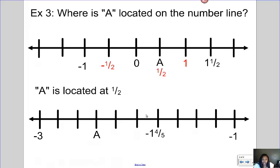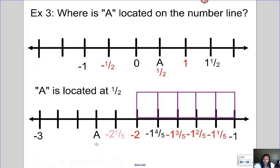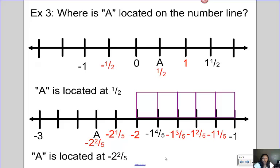On the second number line, again we want to know where is A located. I see negative one and four fifths, which clues me in that it's probably broken into fifth-sized pieces. If I were to take a fractional bar and draw that into fifths, going from negative one to here: I have negative one here, then this line would be negative one and one fifth, this would be negative one and two fifths, this would be negative one and three fifths, and that makes this negative one and four fifths — which does work — and then this would be negative two. Keeping going with the pattern, this would be negative two and one fifth, this would be negative two and two fifths, which tells me that A is located at negative two and two fifths. It's really about filling in the blanks and guessing and checking to make sure you've counted the numbers correctly on your number line.